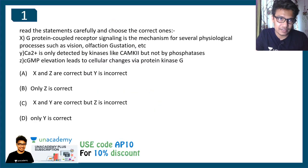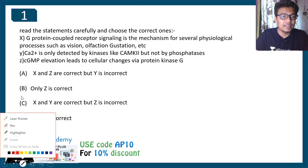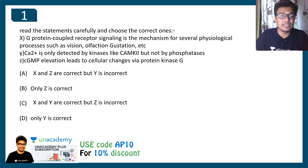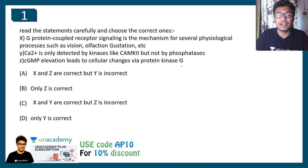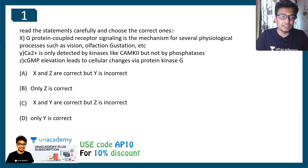Now let's start with our question-answer discussion. The first question says: read the statements carefully and choose the correct ones. Statement X: G protein-coupled receptor signaling is the mechanism for several physiological processes such as vision, olfaction, gustation, etc. Statement Y: calcium is only detected by kinases like CAMK2, but not by phosphatases. Statement Z: cyclic GMP elevation leads to cellular changes via protein kinase G. Option A says X and Z are correct but Y is incorrect. The correct answer is option A.